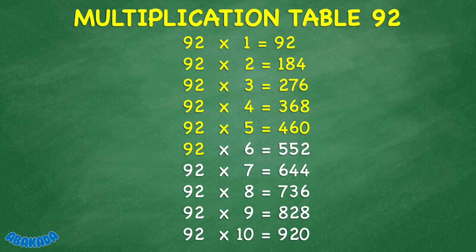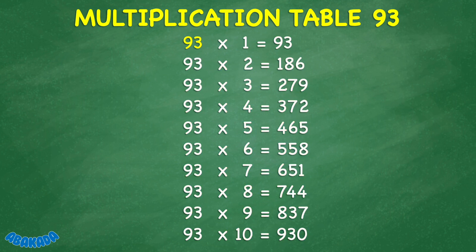92 times 6 equals 552. 92 times 7 equals 644. 92 times 8 equals 736. 92 times 9 equals 828. 92 times 10 equals 920. 93 times 1 equals 93. 93 times 2 equals 186. 93 times 3 equals 279.